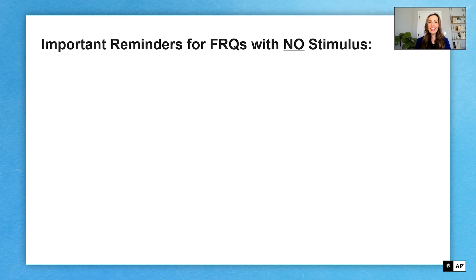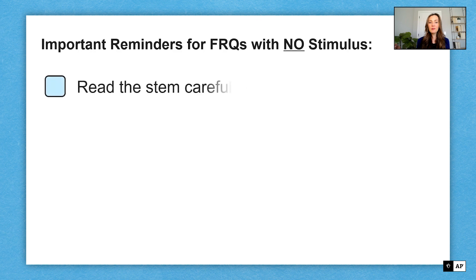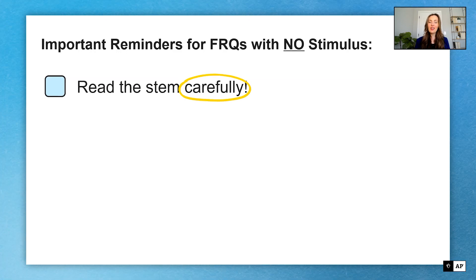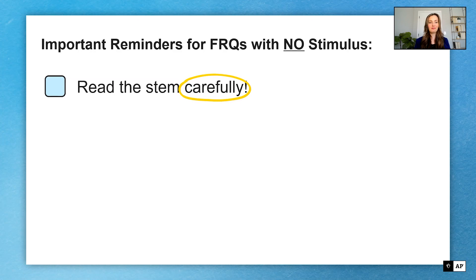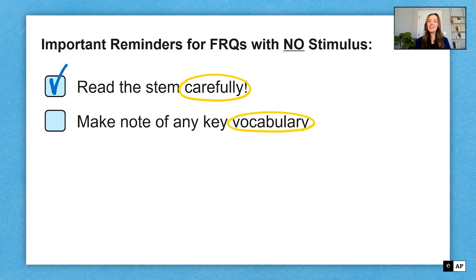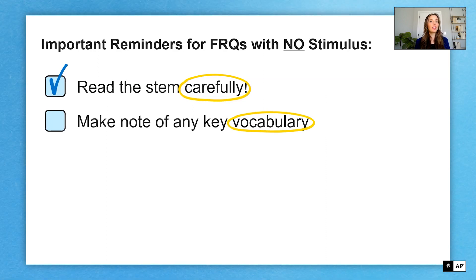As we're tackling FRQs with no stimulus, we will always remember to read the stem carefully. Make sure you know exactly what the question is asking so you are sure that your answer will address that question. Next, make note of any key vocabulary. That's going to give you a hint of the kind of terms the AP graders will want to see in your answer.